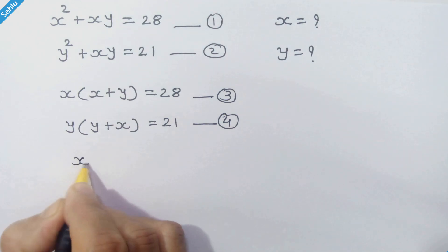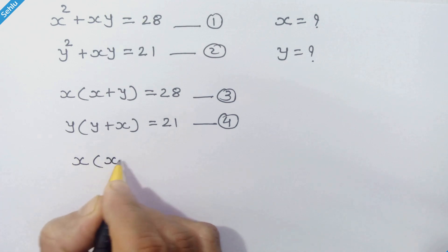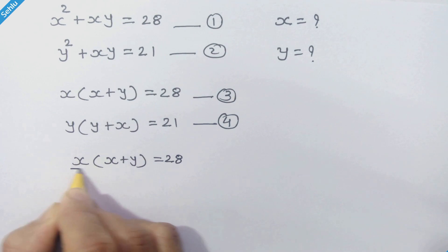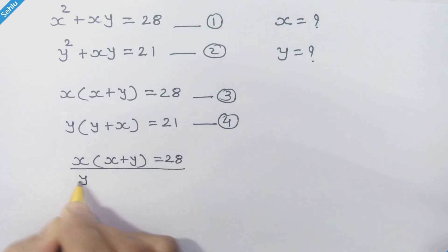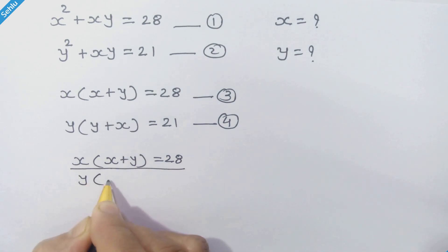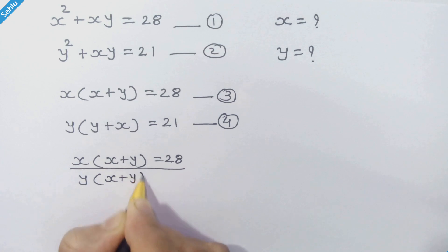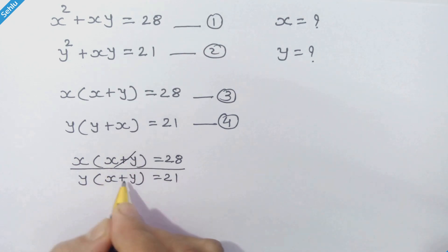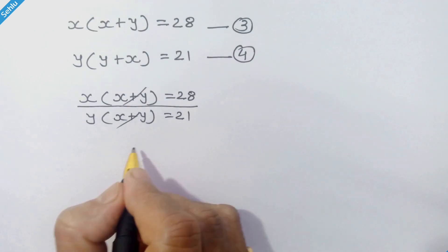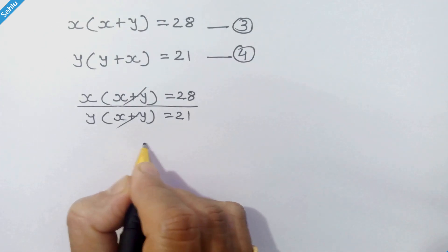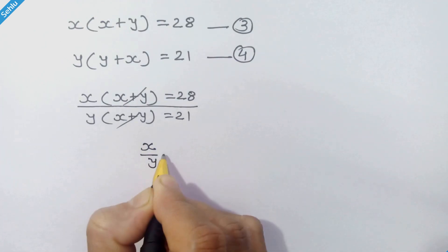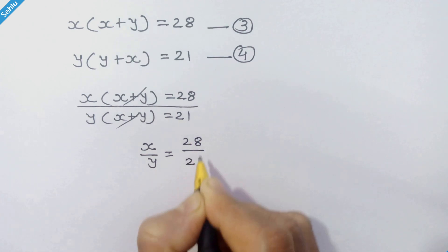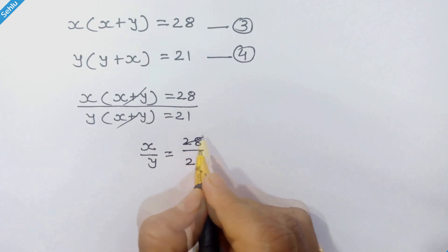Now what we are going to do is divide equation 3 by equation 4, so we have x times (x plus y) equal to 28, upon y times (x plus y) equal to 21. The (x plus y) terms get cancelled out, so we have x upon y is equal to 28 upon 21.